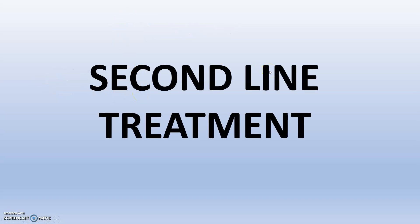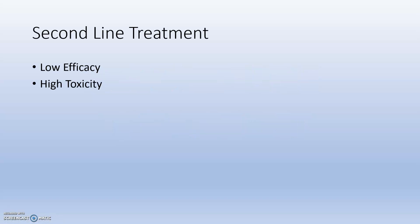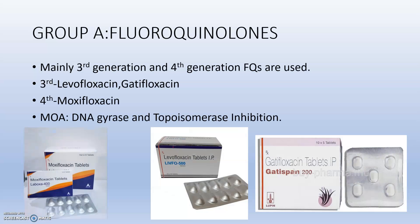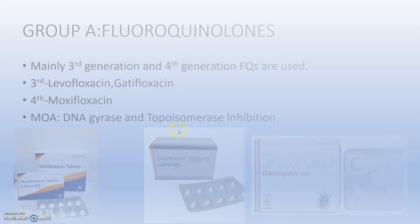For second-line treatment, efficacy decreases and toxicity increases. Second-line drugs are classified into groups A, B, C, and D. Group A consists of fluoroquinolones — mainly third and fourth generation: levofloxacin and gatifloxacin in third generation, and moxifloxacin in fourth generation. The mechanism of action is inhibition of DNA gyrase and topoisomerase. Since mycobacterium is more similar to gram-positive bacteria, topoisomerase IV is the primary target.